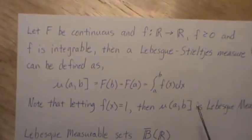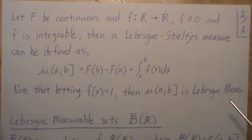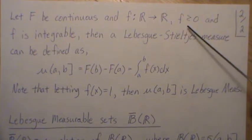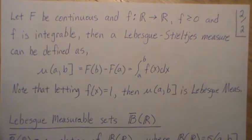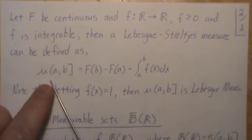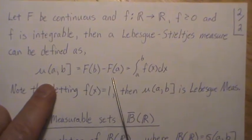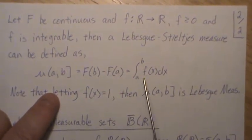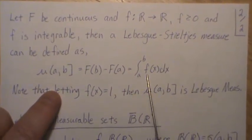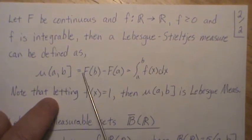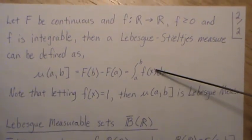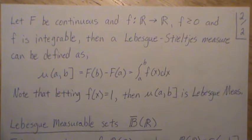Continuing on this concept, let F be continuous and f: ℝ → ℝ, f ≥ 0 and integrable. Then the Lebesgue-Stieltjes measure can be defined as μ(a,b] = F(b) - F(a), but that's this integral where the derivative of capital F is little f. So this integral, when you evaluate it, is the Lebesgue-Stieltjes measure.